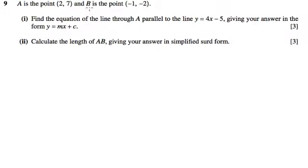Part 2 wants us to calculate the length of A to B. That's your Pythagoras equation, so the length of A to B is the square root of the change in the x coordinates.